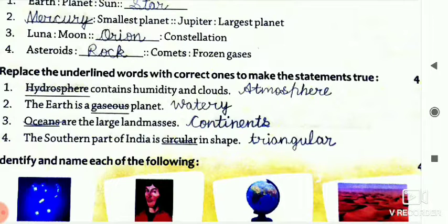Next one is, the southern part of India is circular in shape. So we write here, triangular. So the answer is, the southern part of India is triangular in shape.